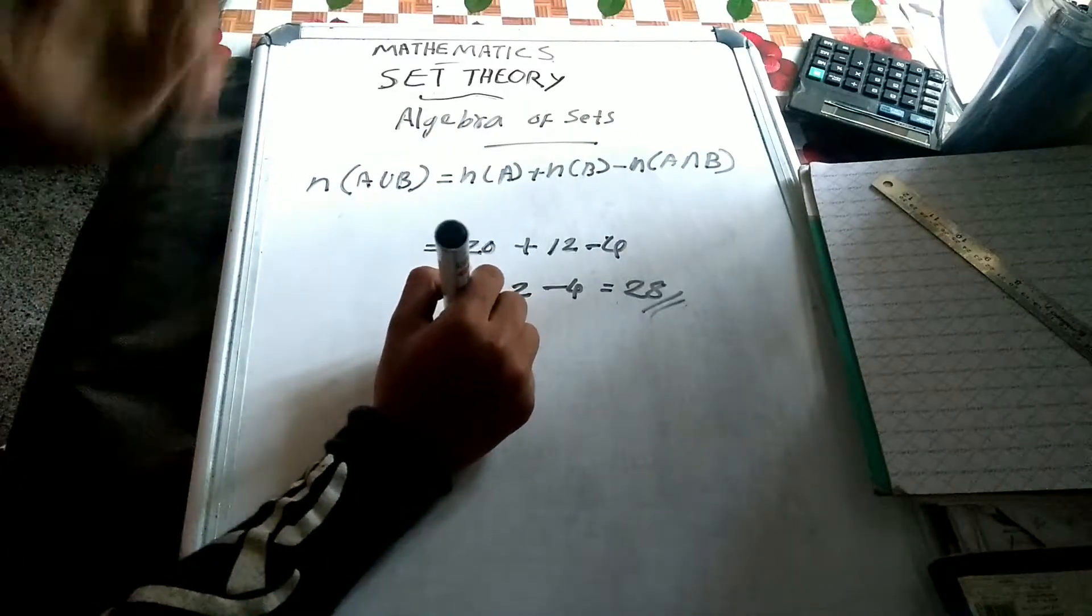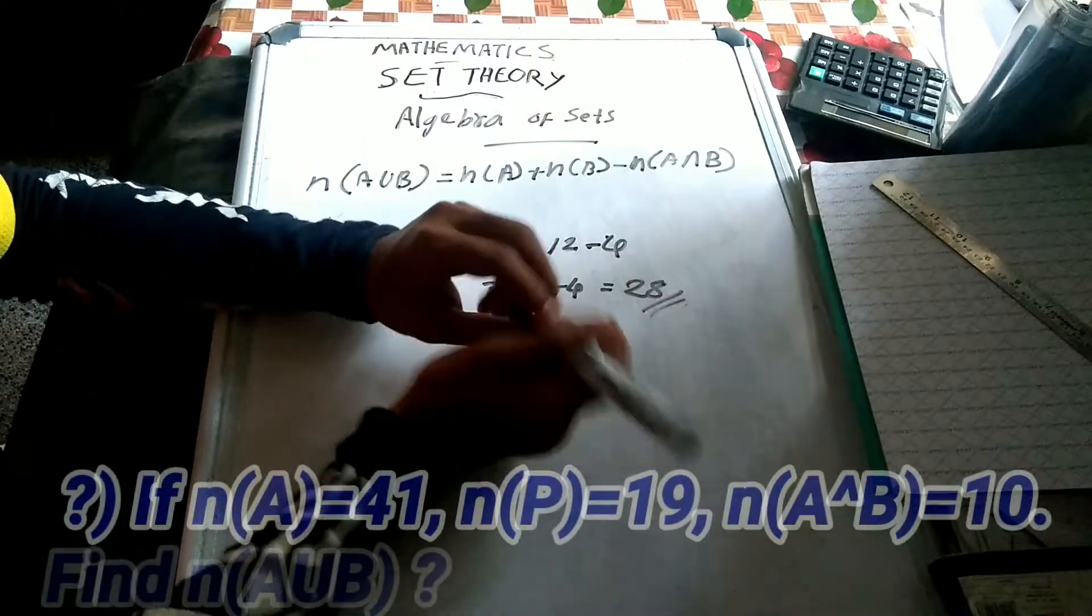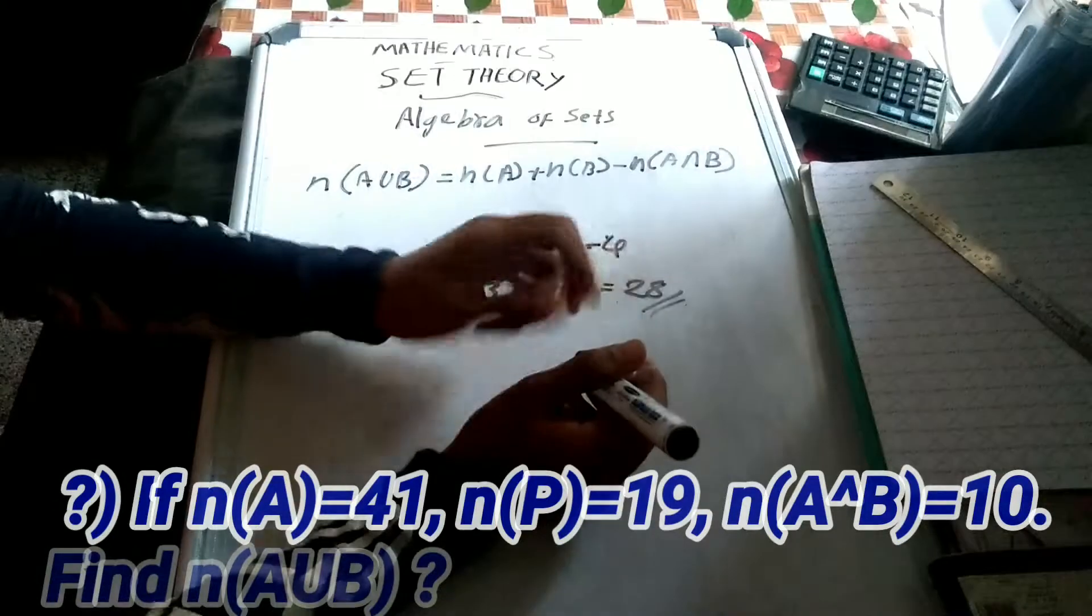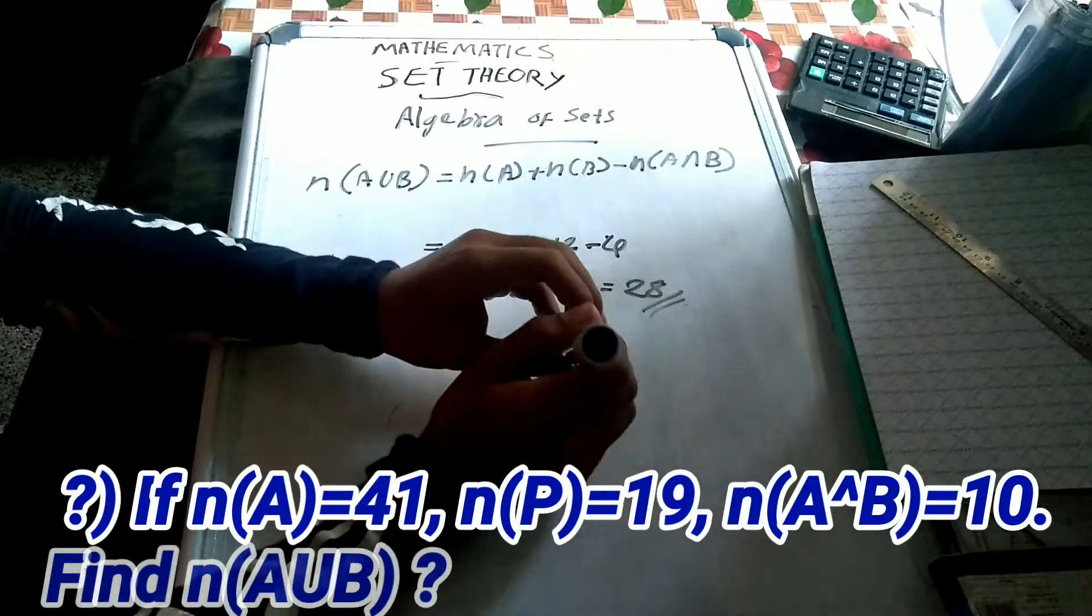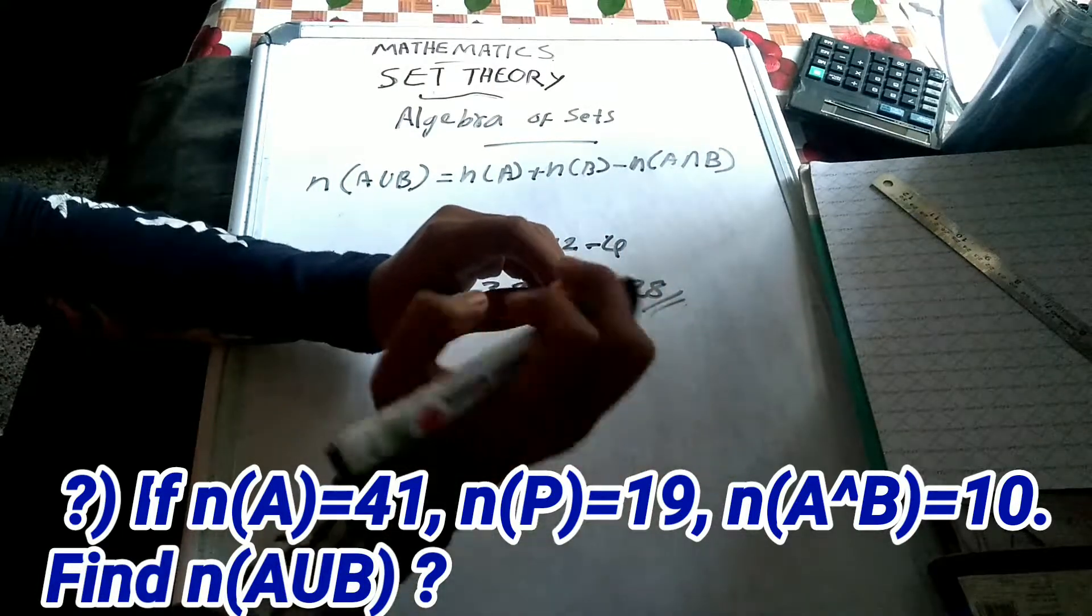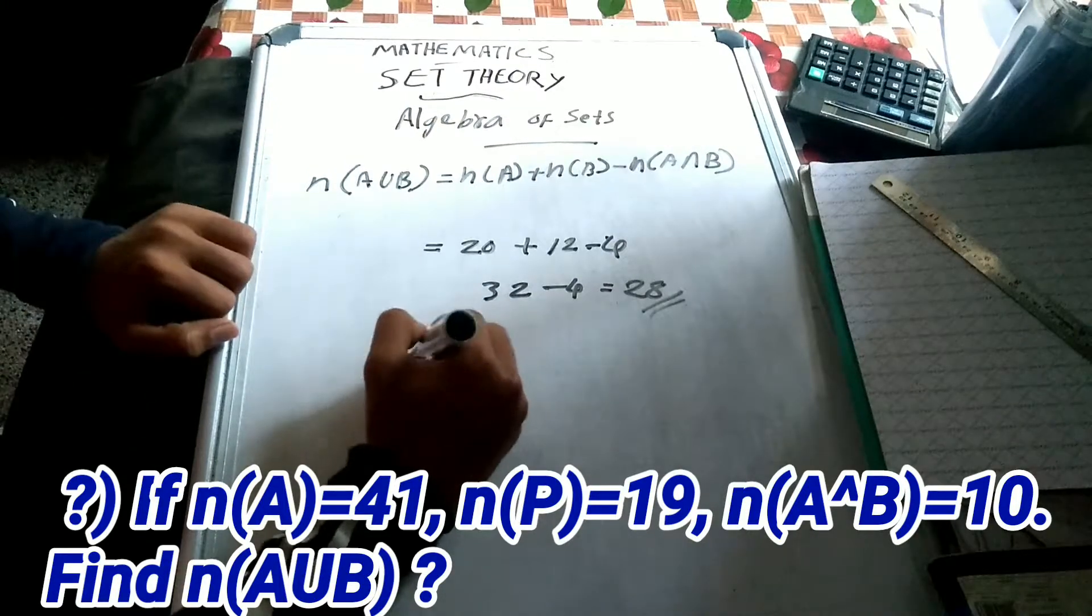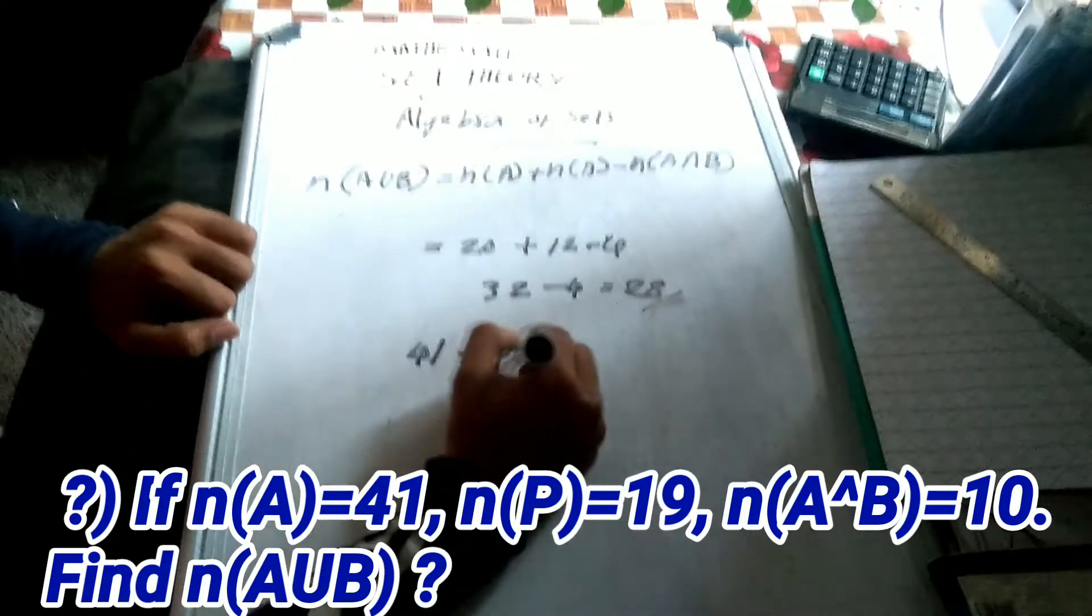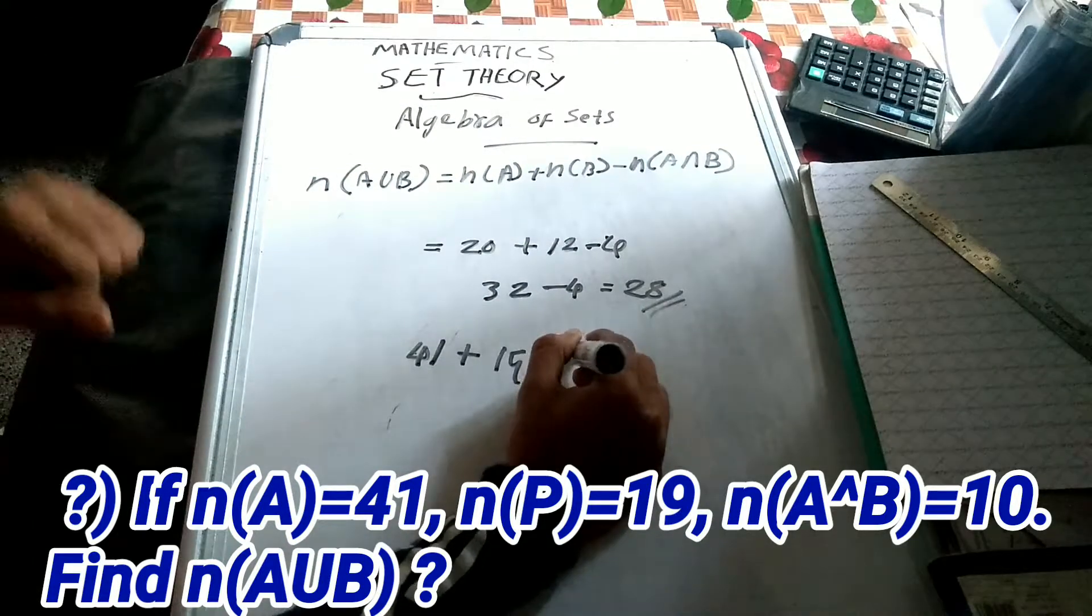Okay, next question. If n(A) is equal to 41, n(B) is equal to 19, and n(A intersection B) is equal to 10, then find n(A union B).